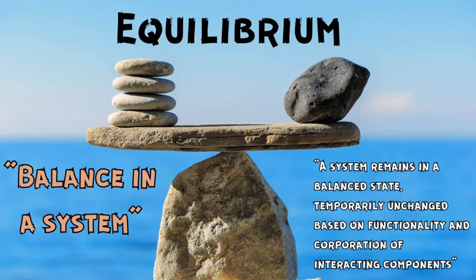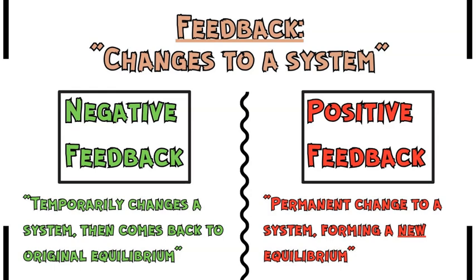Equilibrium is a very important term to understand when discussing systems and feedback. Feedback is defined as a change, modification, stress, or stressor applied to a system, and there will be a definitive effect on that system because of the feedback applied. There are two types of feedback: negative and positive. Don't think about this as a spoken-word English or sports analogy of feedback being good or bad — think of it as the changes to a system and the effect on the equilibrium of that system caused by the feedback.